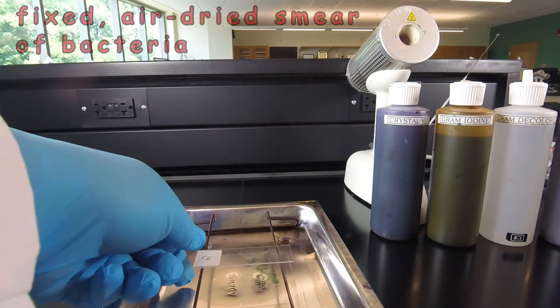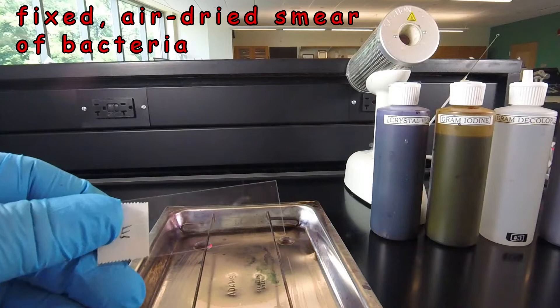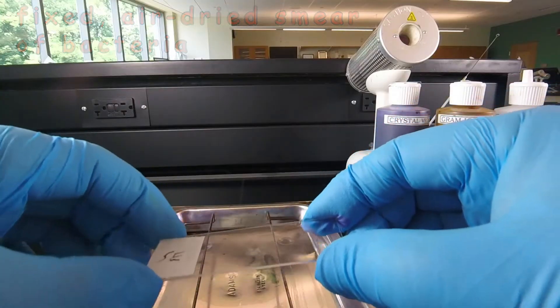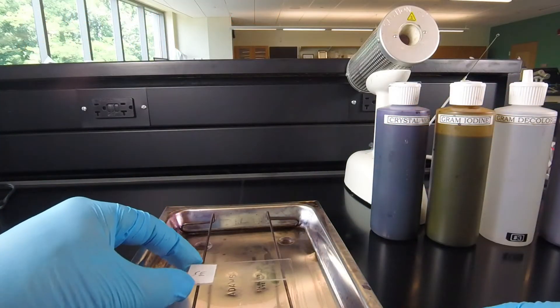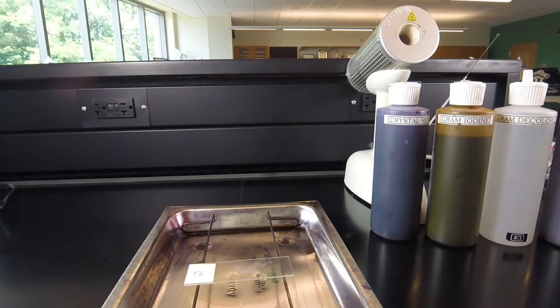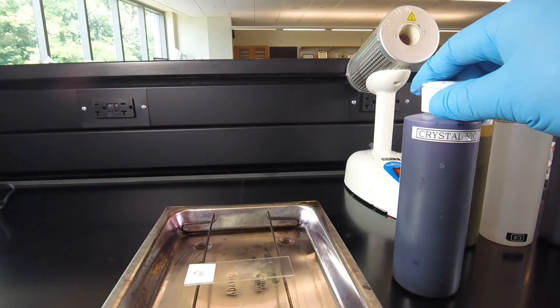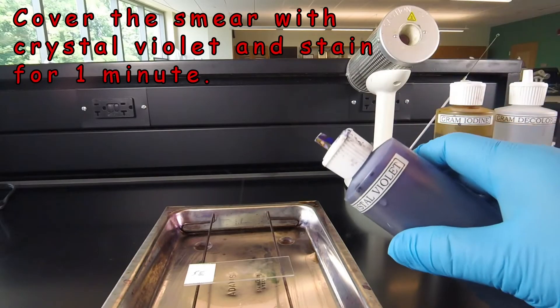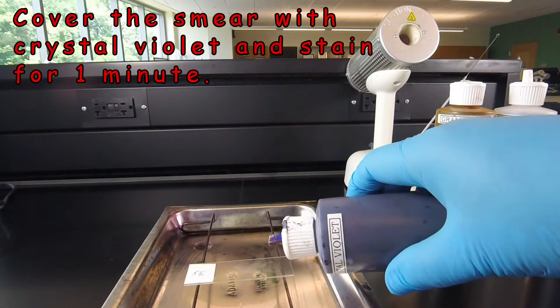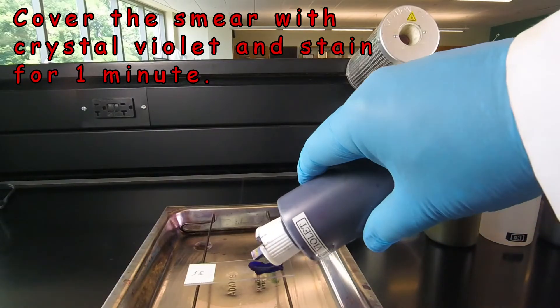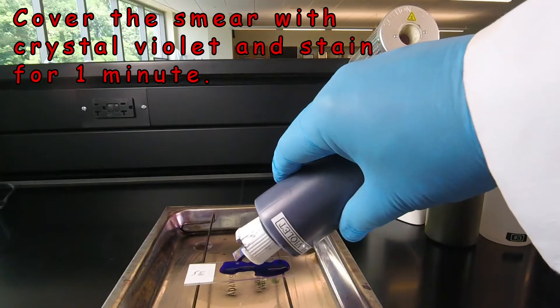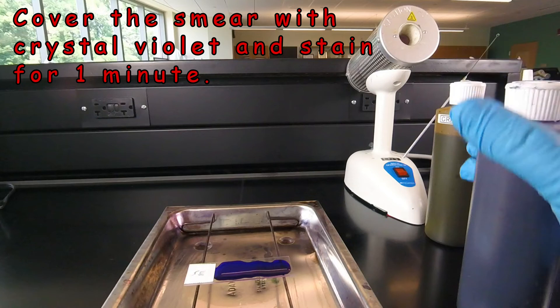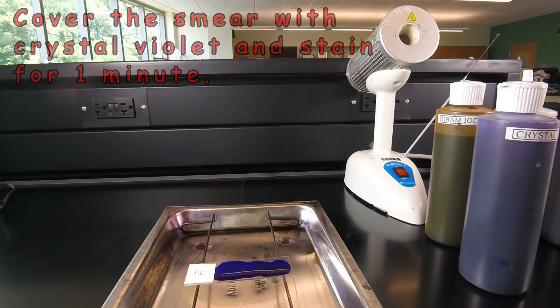We have an air-dried smear of bacteria that we've prepared according to the instructions we learned in a previous video lesson, and we're ready to start doing the Gram stain. The first step in the Gram stain is to stain the bacteria with a basic dye crystal violet. We open up the bottle and add enough crystal violet to cover a good part of the smear, and we let that sit for one minute.